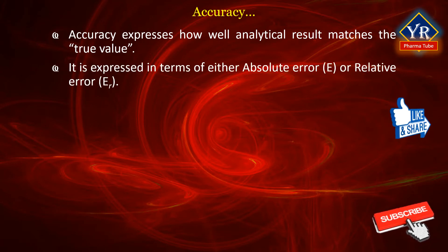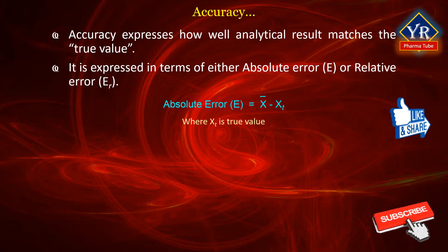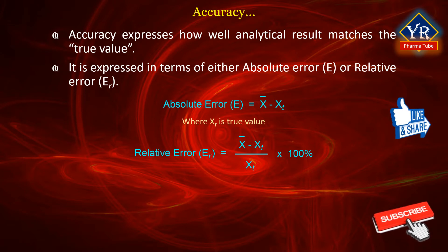Accuracy is expressed in terms of either absolute error or relative error. The absolute error E of the mean (x-bar) of a small set of replicate analyses is given by: E = x-bar minus xt, where xt is the true or accepted value of the quantity being measured. Relative error (er) is calculated by the formula: (x-bar minus xt) divided by xt, multiplied by 100%. Note that both absolute and relative errors bear a sign — a positive sign indicates the measured result is greater than the true value, and a negative sign indicates the measured result is lower than the true value.